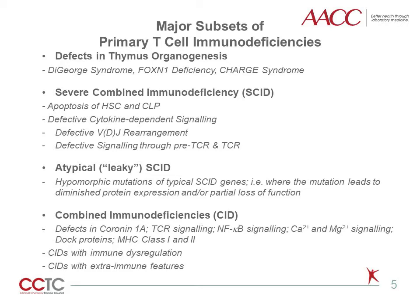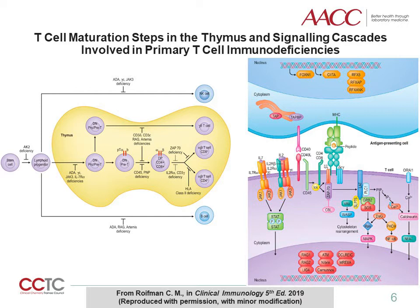There is not a single way to classify primary T-cell immunodeficiencies. However, a common approach is to place these defects into four categories: one, defects in thymus organogenesis; two, typical SCID; three, atypical SCID; and four, combined immunodeficiencies, abbreviated as CID. This slide lists the main subgroups in each of these categories. A comprehensive classification and discussion of these diseases can be found in the following references. The two figures here highlight the underlying cause for a number of important T-cell immunodeficiencies in the context of the main maturation steps in the thymus, and the signaling pathways involved in T-cell development and function.